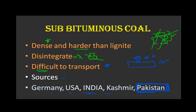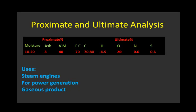Next we will see the proximate analysis and ultimate analysis of Bituminous Coal. In the proximate analysis: Moisture 10-20%, Ash 3-5%, Volatile Matter (VM) 40%, Fixed Carbon 70%, Carbon content 70-80%, Hydrogen 4.5%, Oxygen 20%, Nitrogen 0.6%, Sulfur 0.6%.